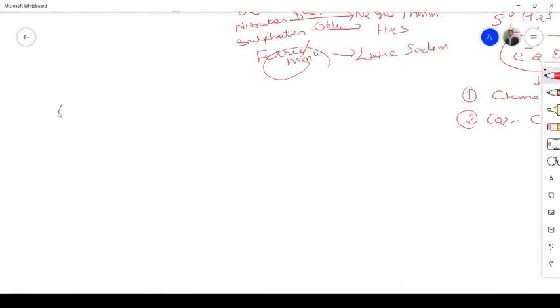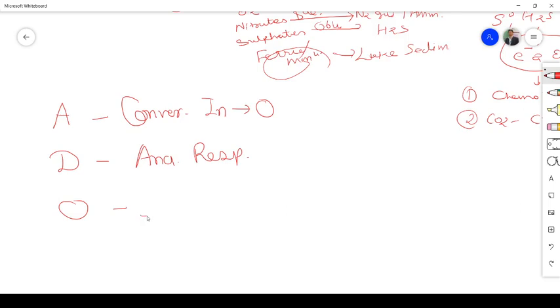I will give you the short form. A, D, O. There are three pathways. Very simply if you see here it is conversion from inorganic to organic conversion to INO. Here anaerobic respiration and here it is mainly lithotrophy. Just this is the short form. Inorganic to organic, anaerobic respiration and lithotrophy. So these are the three main pathway.